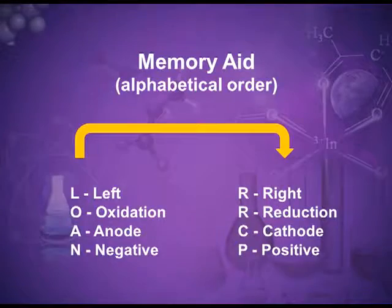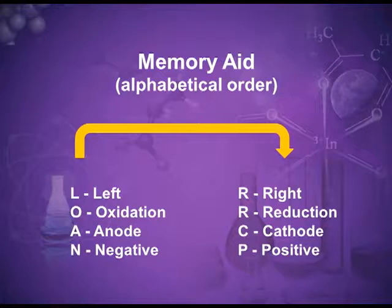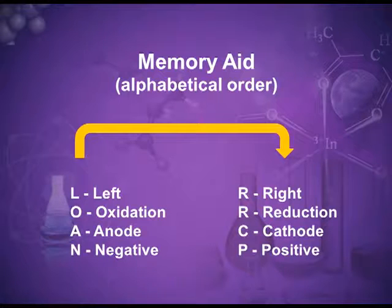Let me give you another memory aid — you can use either one. That is the alphabetical order. L is left, and R is right — R always comes after L in the alphabet. O is oxidation, R is reduction. A is anode, C is cathode. N is negative, P is positive. R, C, and P always come after L, O, A, and N in alphabetical sequence.